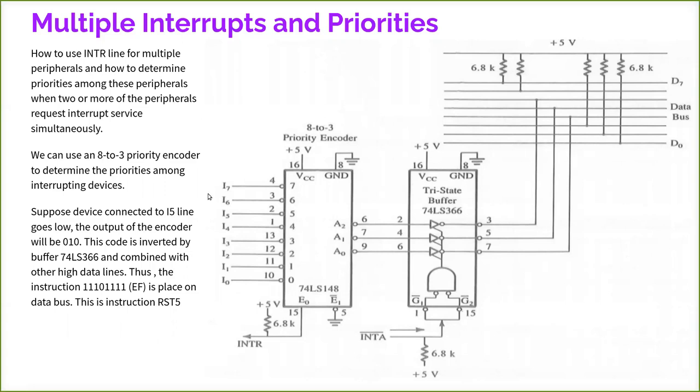Now we will see how it handles multiple interrupts. We have seen when one device is asking. Now how it handles multiple interrupts? When multiple are asking, at a time only one will be decided by priority. Suppose the device which is connected to this I7. This will have more priority always. So that is a drawback here. The device which is connected to I7 will always be serviced first. And it takes in this order. So this will have the lowest priority, and so on.